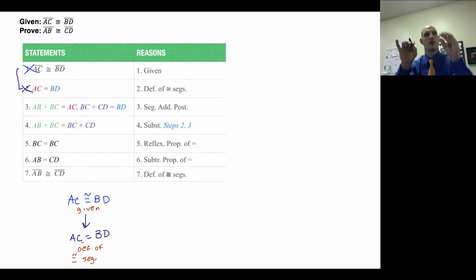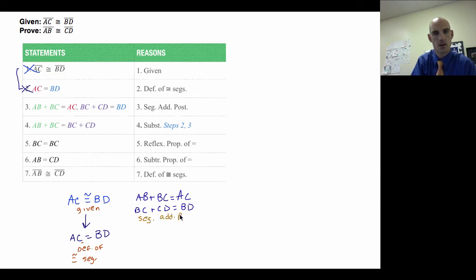Definition of congruent segments. Well, you can kind of see I'm done with that line of thought now. So my next line is related, but it's got a bunch of different new elements. And so that's what I'm going to know to start another column. So what I'm going to say is AB plus BC equals AC, and then BC plus CD equals BD. My reasoning there is going to be segment addition postulate. Okay, so that's going to be my segment addition postulate.